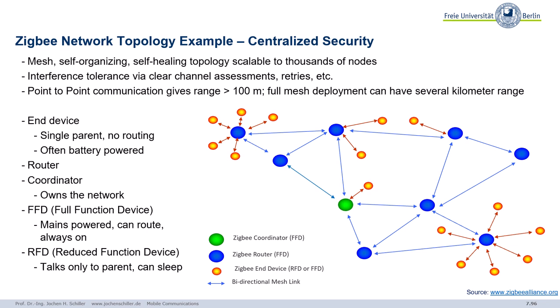ZigBee is a mesh network that is self-organizing and self-healing. Self-healing means: if there is a problem with a connection somewhere, traffic is automatically rerouted. That's the self-healing characteristic. There is also some tolerance against interference. There are different types of devices — very very simple end devices.